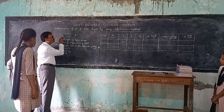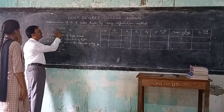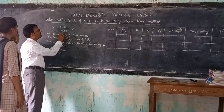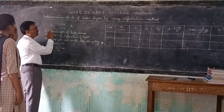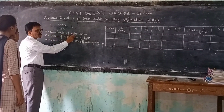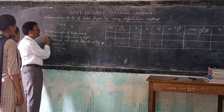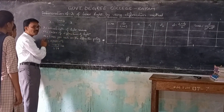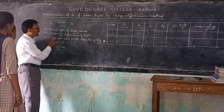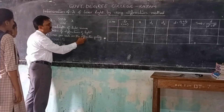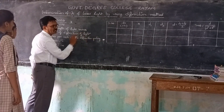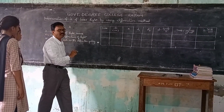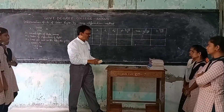Lambda is equal to sin theta by m times N. Here, lambda means wavelength of the light source, small m is the order of diffraction of light, and capital N is the number of lines per inch on the diffraction grating. To determine this wavelength, we need some apparatus.